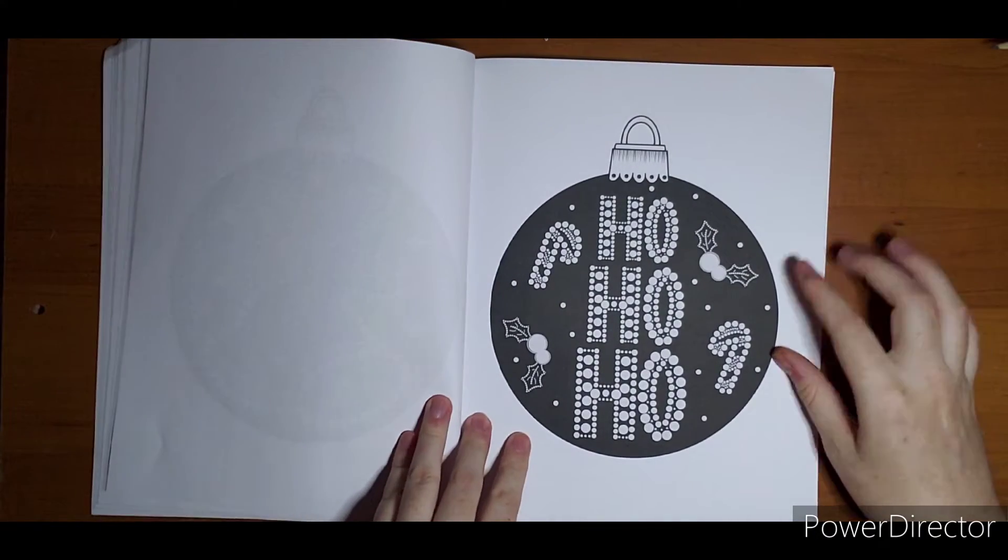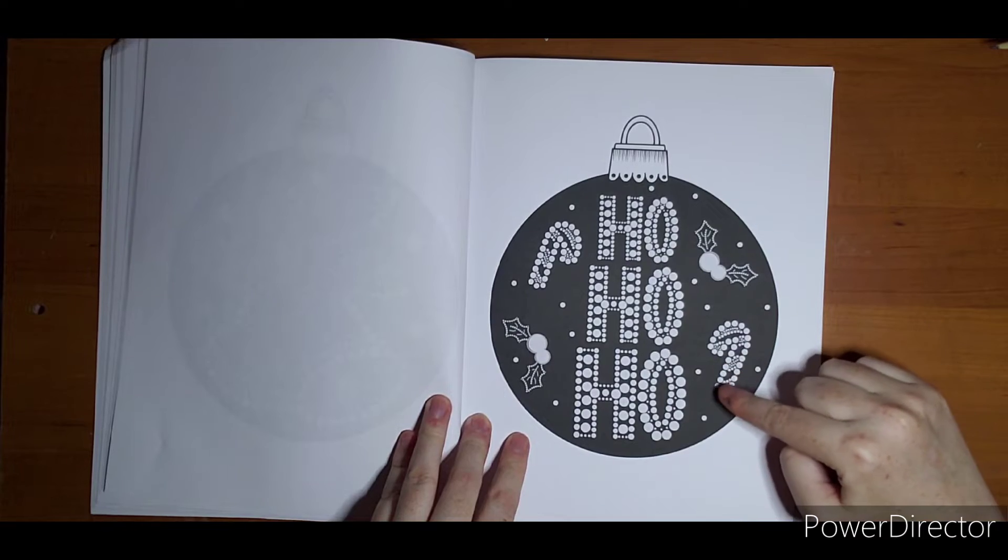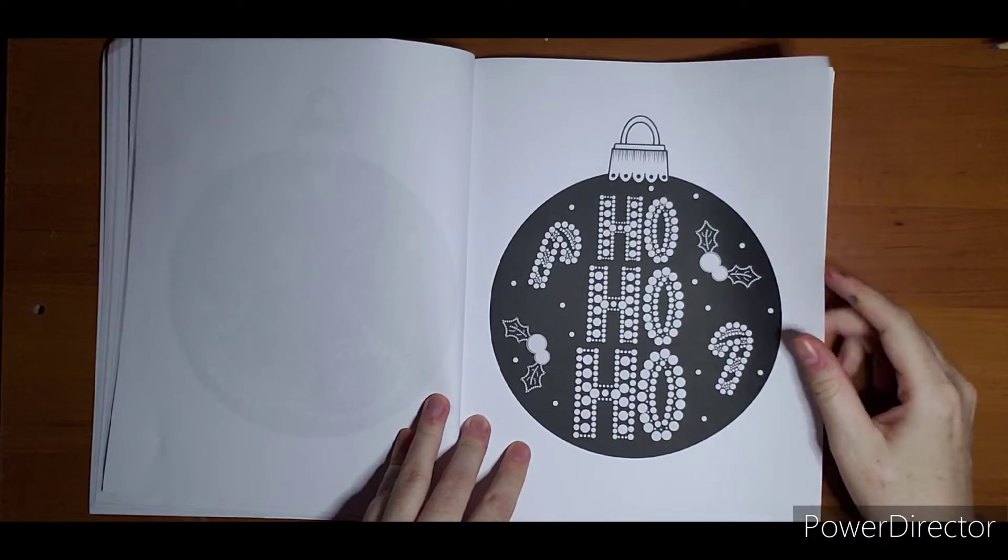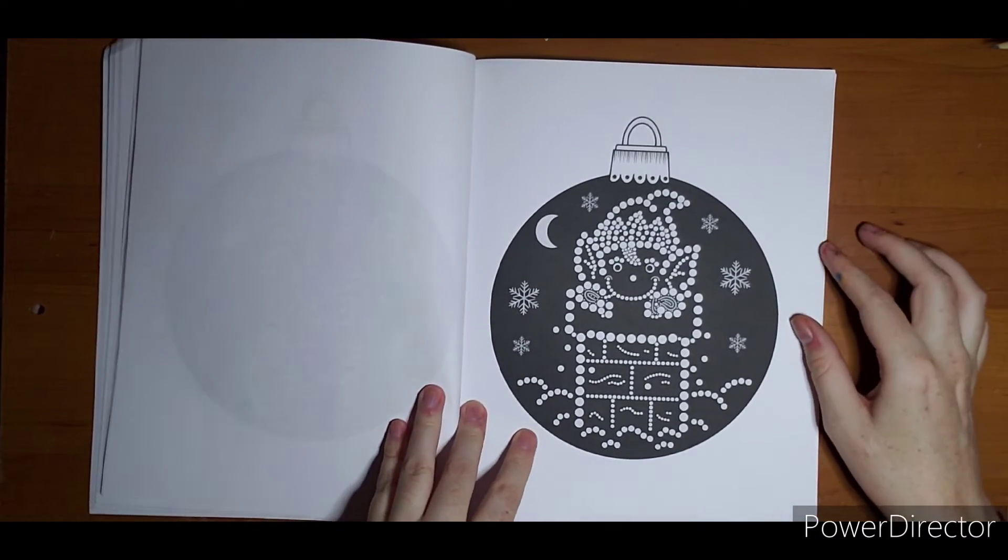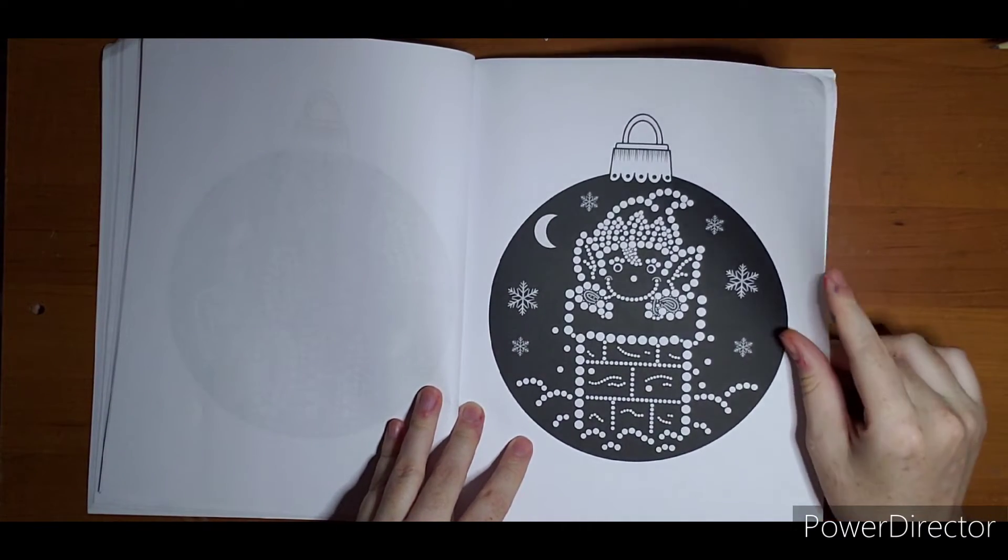Ho ho ho, and look the little candy canes have tiny dots for stripes. How cute is that? A little elf popping out of the chimney, he must be helping with presents.